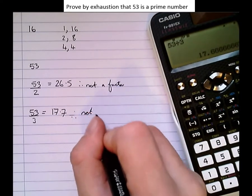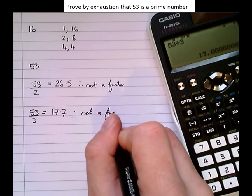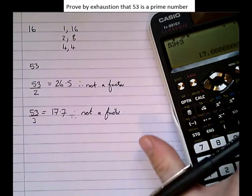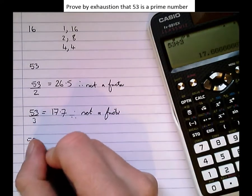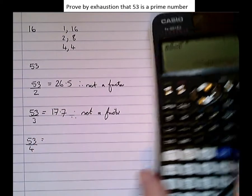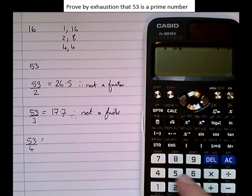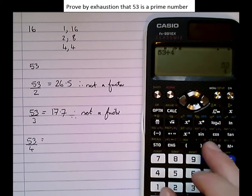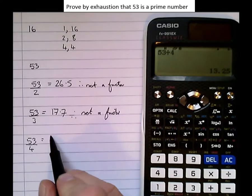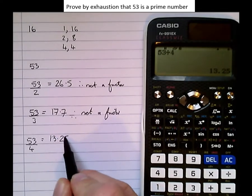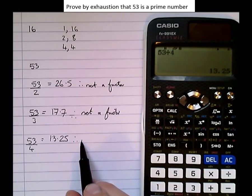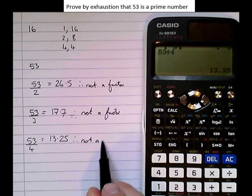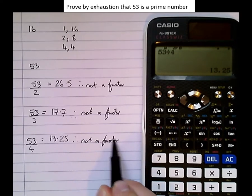Let's try 53 divided by 4. Clearly it's not going to be a factor because 53 isn't even and 4 is, but for completeness of working, let's write them all down. Therefore, not a factor.